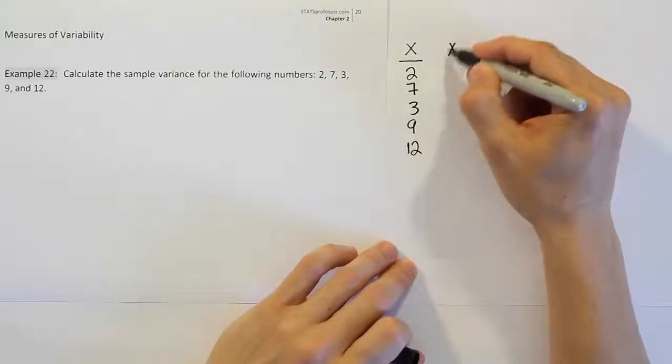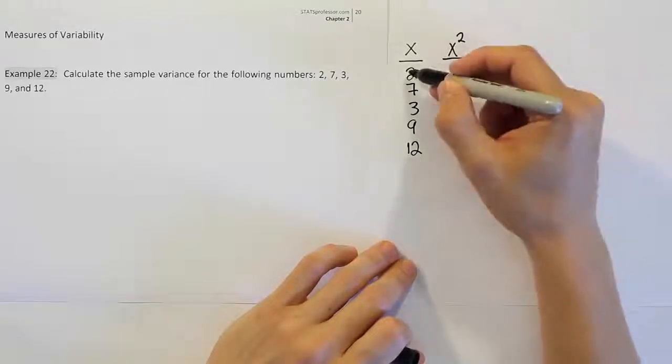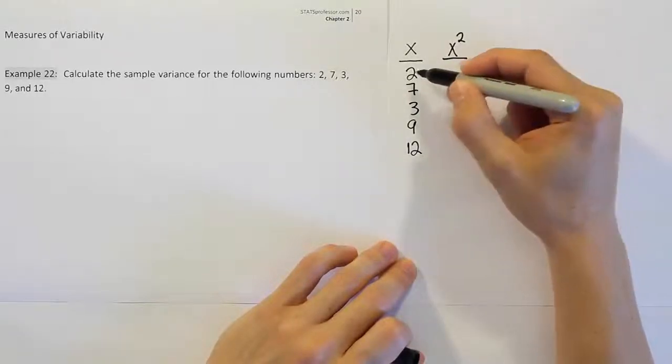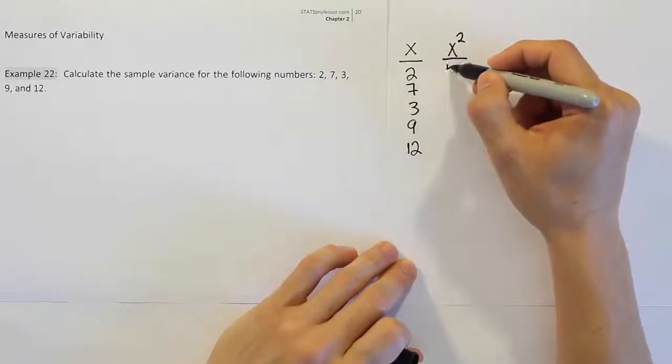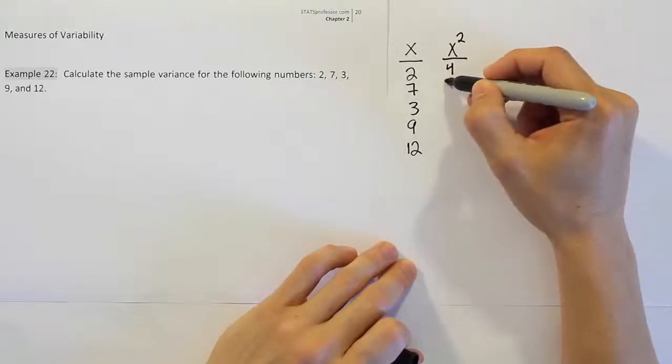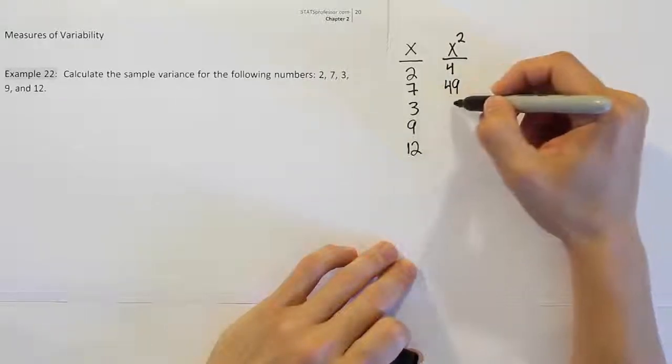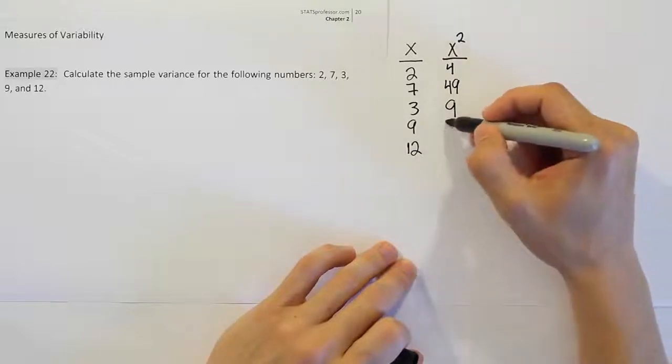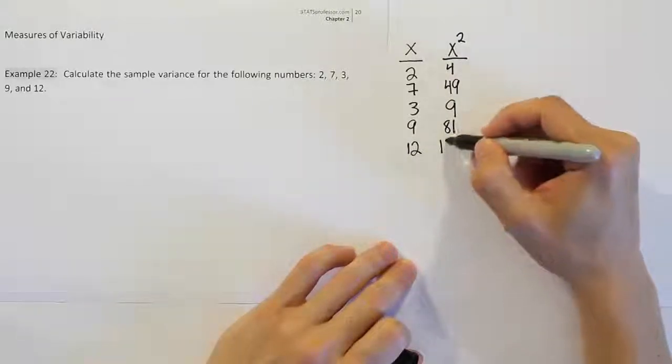The next step is to create a column that has the same data values but squared. So we're going to do 2 squared, which gives you 4. 7 squared, which gives you 49. 3 squared, which gives you 9. 9 squared, which gives you 81. And 12 squared, which gives you 144.